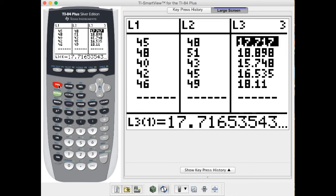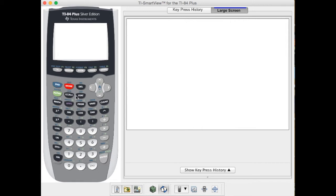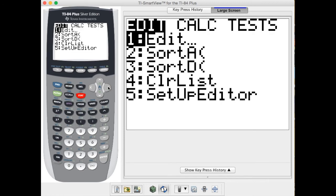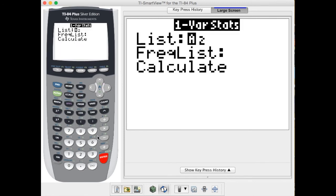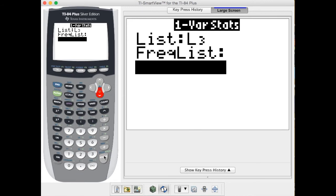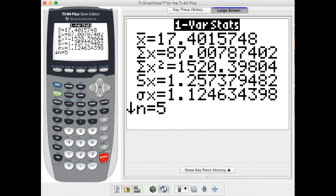Again we'll go back to second mode to quit, stat, calc, one var stats and now our information is in list three.